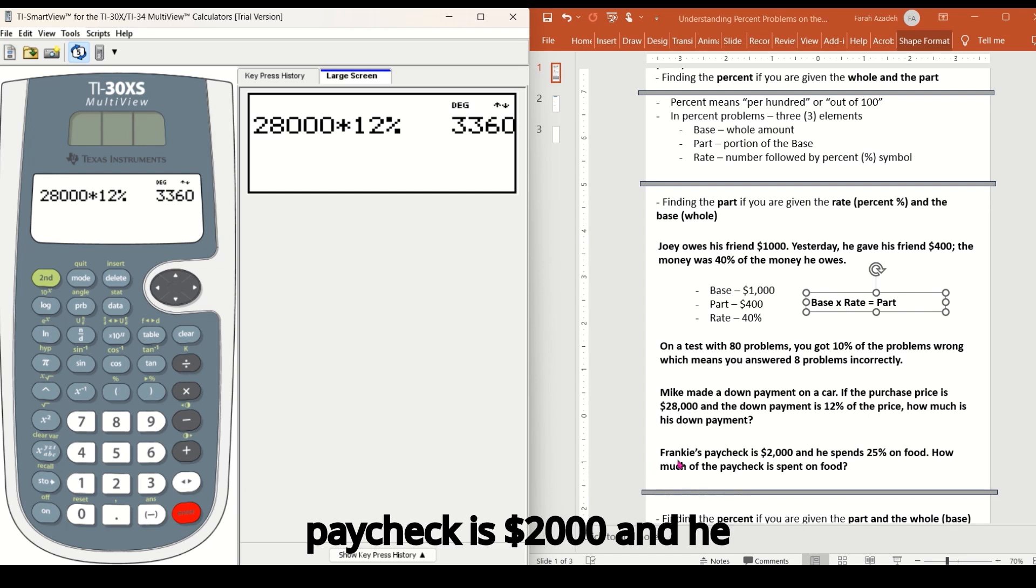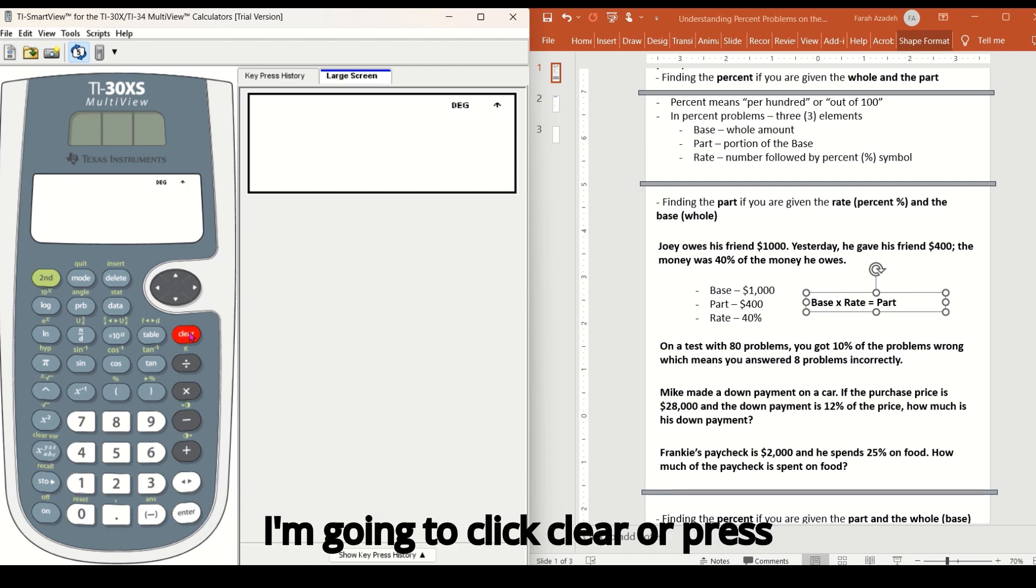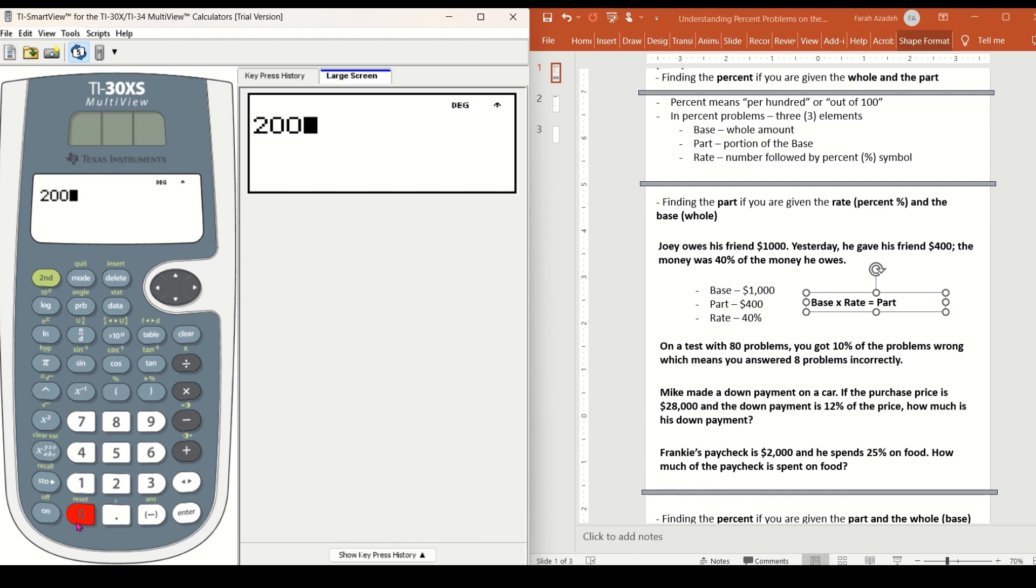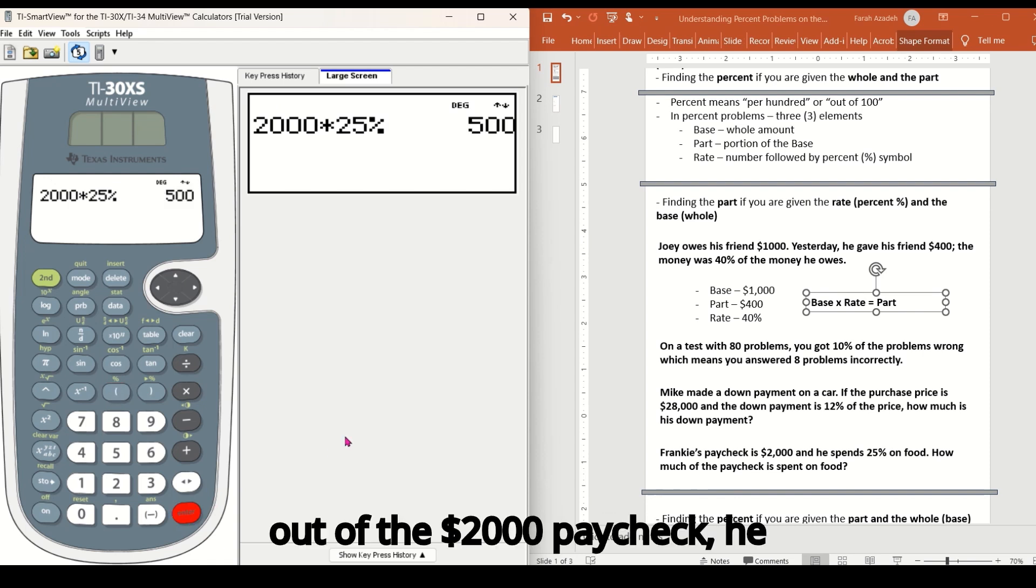So let's go to the next one. Frankie's paycheck is $2,000 and he spends 25% on food. How much of the paycheck is spent on food? I'm going to come to my calculator, I'm going to click clear, and I'm going to type 2000 times 25% second open parentheses key. So out of the $2,000 paycheck, he is spending $500 or 25% of it on food.